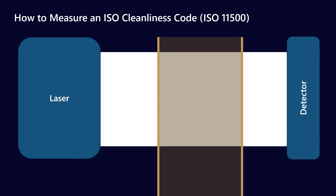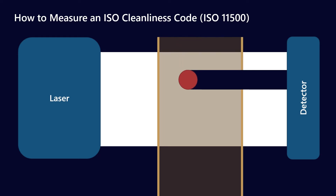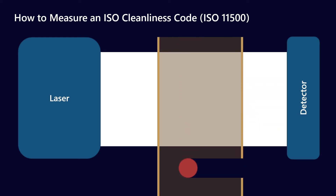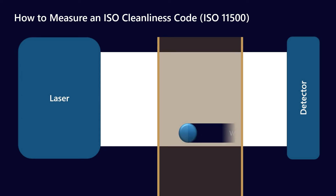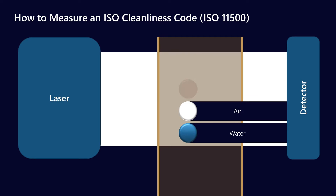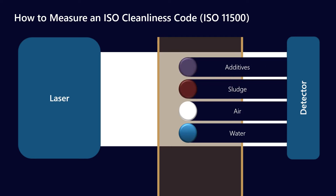Just to recap - I'll put a link in the description - ISO 11500 uses the light extinction method, so a particle crosses a laser beam and is picked up on the detector. The problem with this is that it can also pick up things such as water, air, sludge, and additives.